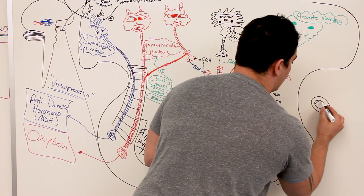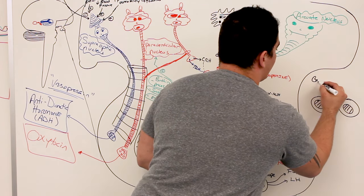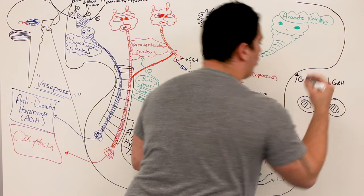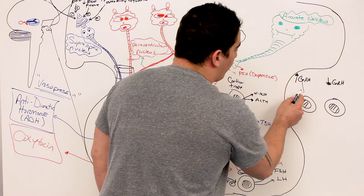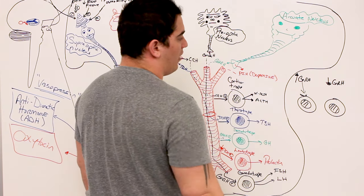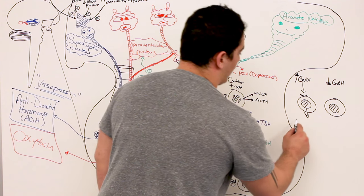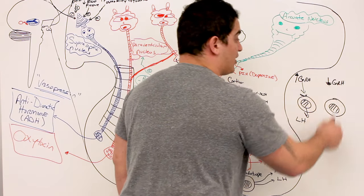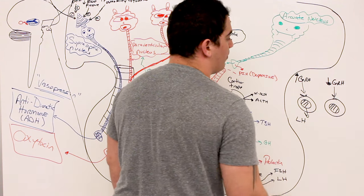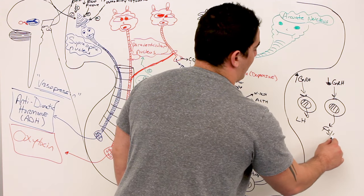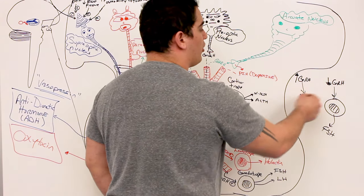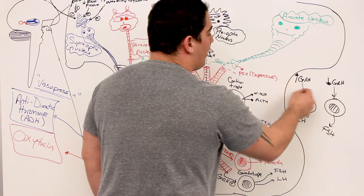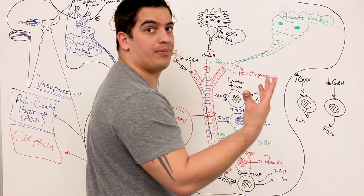When GnRH is released at high frequency, it stimulates the gonadotrope to release LH. When GnRH is released less frequently — still at high levels but less often — it stimulates the gonadotrope to release FSH. So in general, more frequent high levels of GnRH lead to LH production, while less frequent stimulation leads to FSH production.